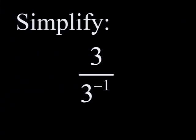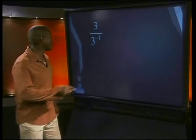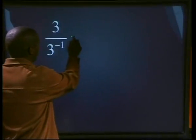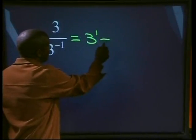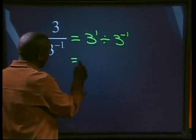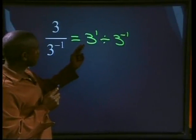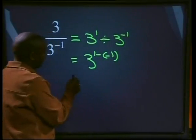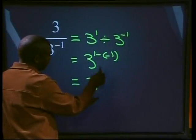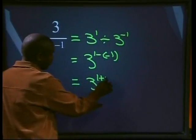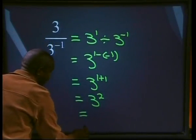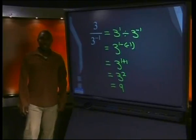Simplify three divided by three to the power minus one. We can rewrite three as three to the power one, so we have three to the power one divided by three to the power minus one. Our division law says we subtract the exponents: one minus negative one — a negative and a negative gives us a positive — so that is three to the power two, which is the same as nine.